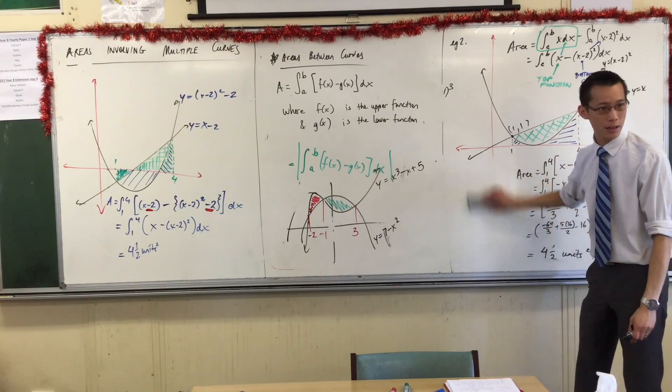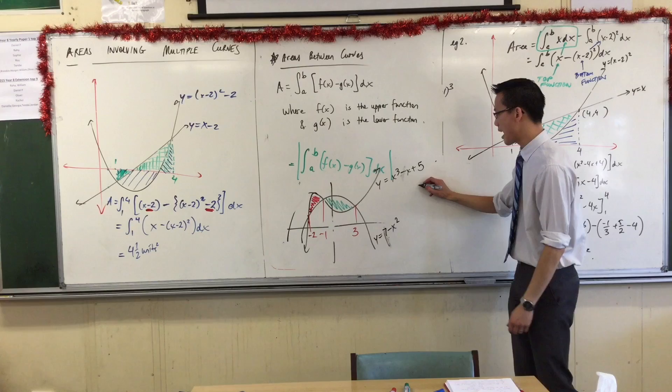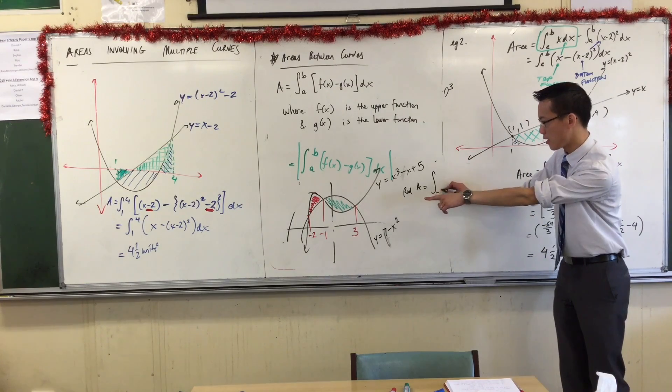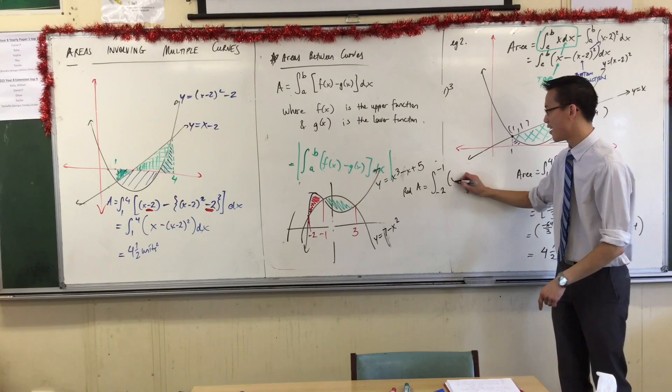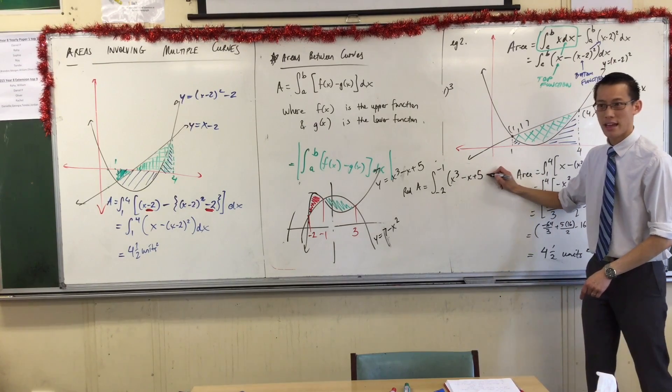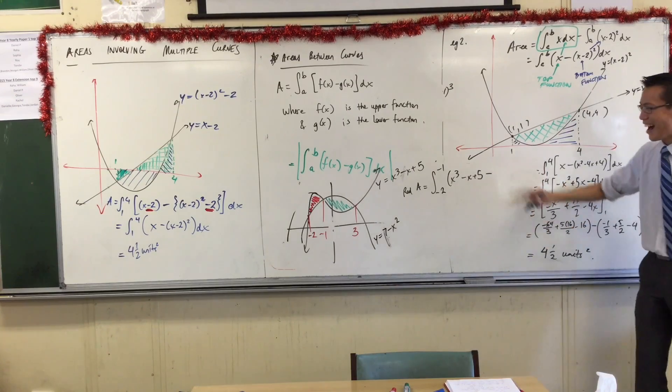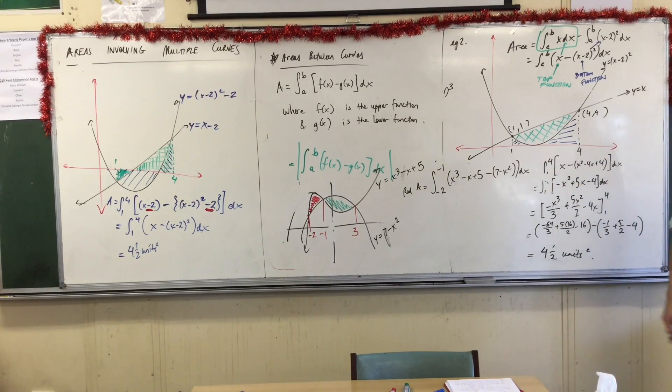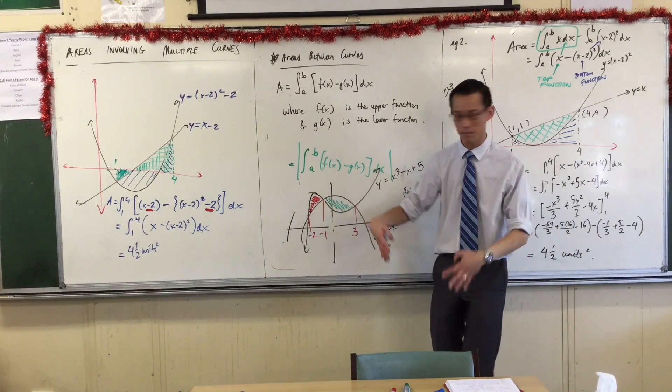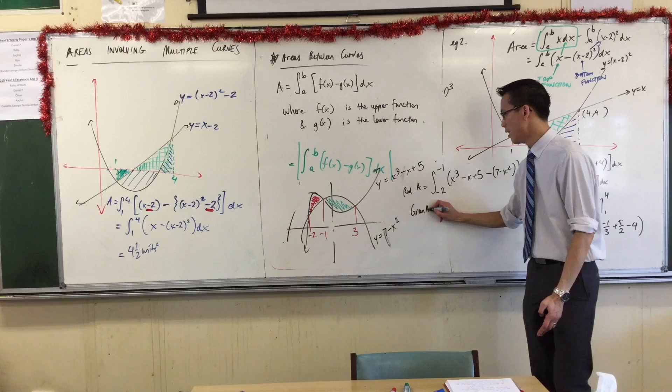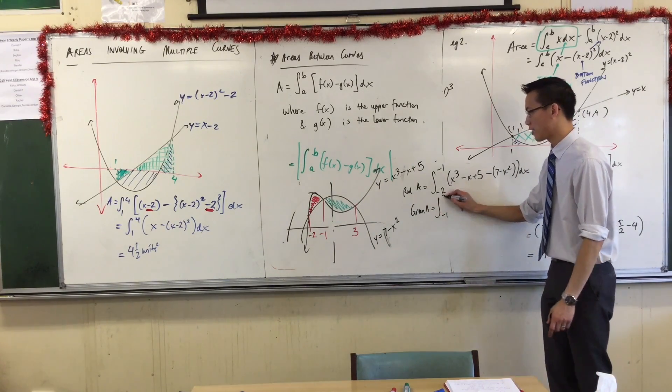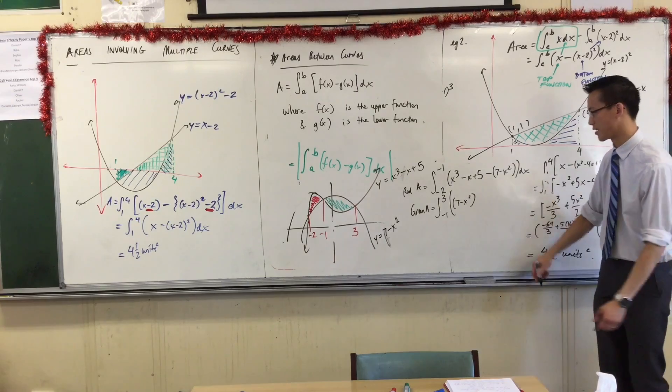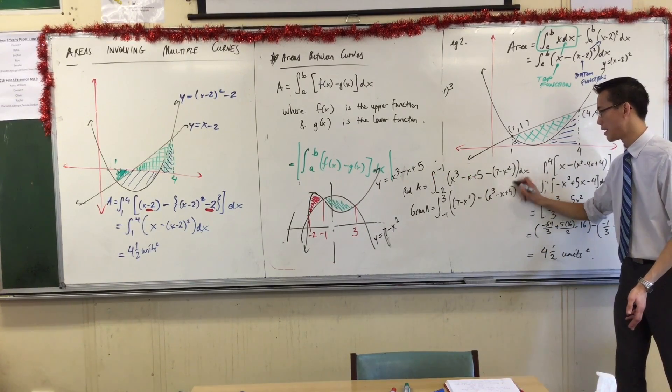So for the first one, which one's on top again? The red area, which one's on top? It's the cubic, right? So I'm going to say that red area is going to be the integral from negative two to negative one of the cubic take away that guy, 7 - x², with respect to x. That'll give me the red area. You see, it's the top take away the bottom. What's on top, what's on the bottom? Then to do the green, firstly the boundaries change. The boundaries are now from negative one to three. And then I switch them around. I say, wait, but now the parabola is the one on top. Actually, I didn't need brackets there. And the cubic is the one beneath.